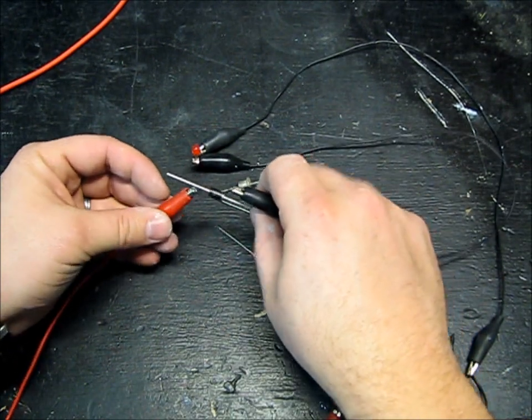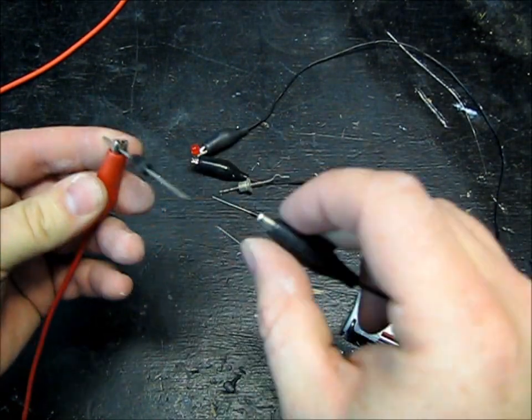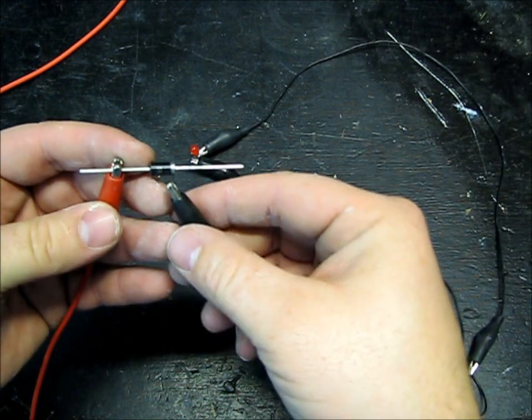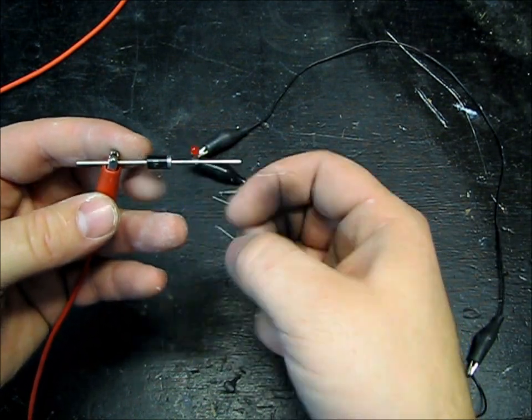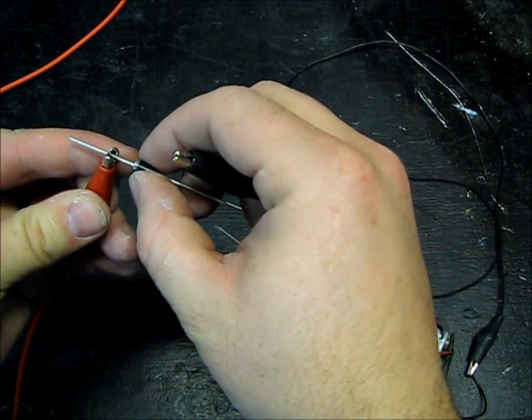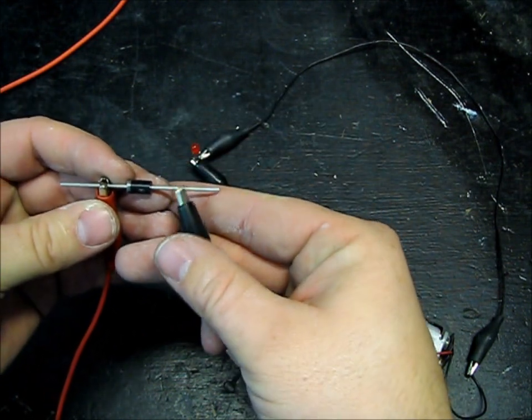So, if you get the diode, positive on this side, black on the side with the band, you can see that it does go through. Turn it around, it does not.